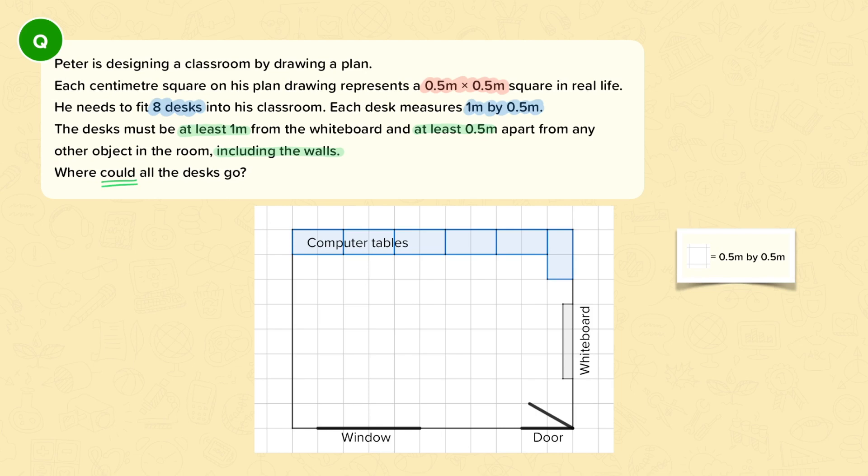So first let's work out what size each desk is. We're told that the scale is 0.5 by 0.5, and so each desk will be 1 meter by 0.5, so that's 1 meter will be 2 squares along and 0.5 will be 1 square along. So we have desks of this size.